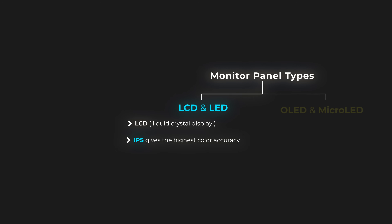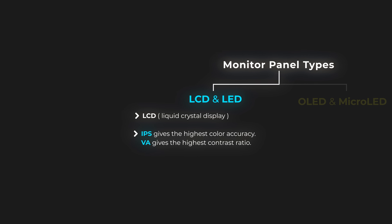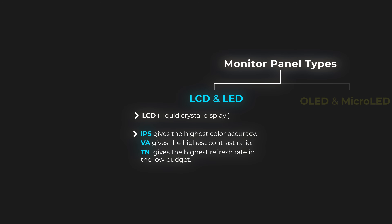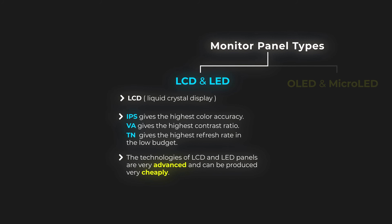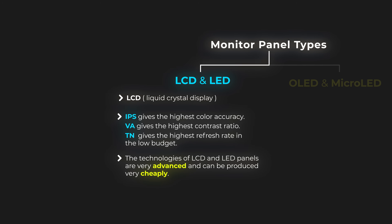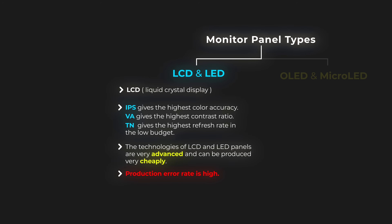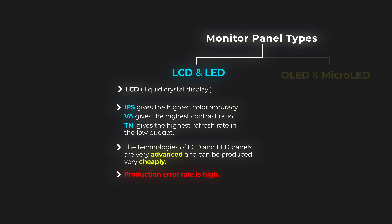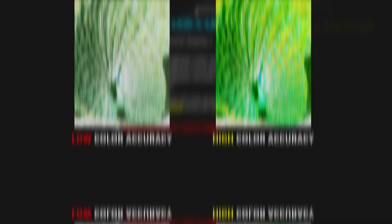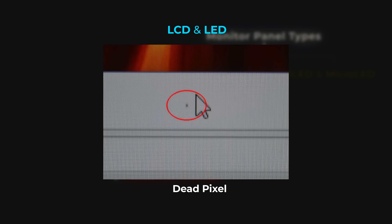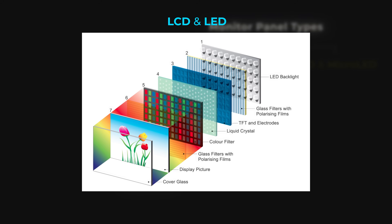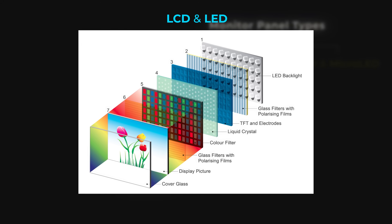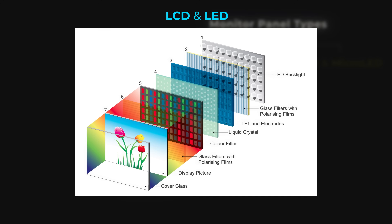You can learn more about these screen types from the 'watch this before you buy a monitor' video. The advantage of LCD and LED panels is that their technology is very advanced and can be produced cheaply, so budget monitor shoppers will likely be looking at these. The biggest disadvantage is low color accuracy and a high production error rate, leading to issues like dead and stuck pixels on cheap LCD screens. Since this screen type has a multi-layered structure, you need to pay attention to response time, as crystals and color filters do not always react simultaneously, causing higher response times.